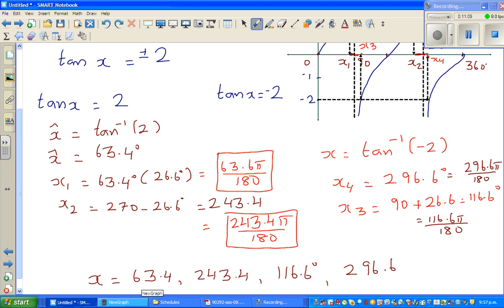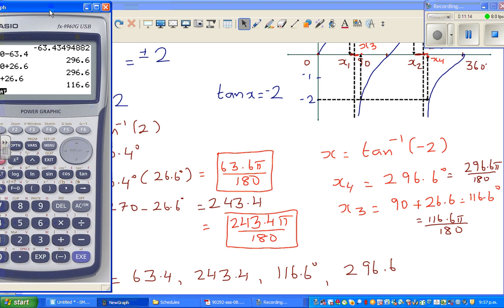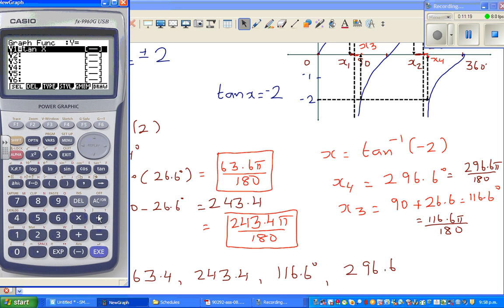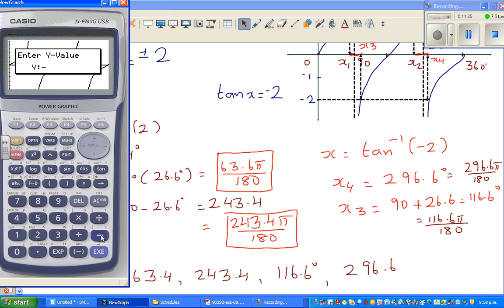Let's check this on the calculator. Go to graph, tan x. G-solve, x-calc for 2. We already confirmed 63.4 degrees and the other angle is 243.4 degrees. Again g-solve, and if you type in negative 2, for the second group of answers, 116.6 and the other angle is 296.6. See you in the next.